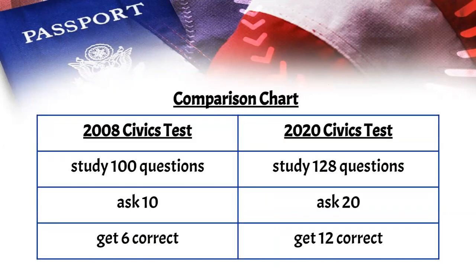To compare the two: for the 2008 civics test, there are 100 questions — they ask you 10 and you have to get six correct. For the 2020 civics test, you study 128 questions; they are a little different, some added, some removed, some changed. They ask you 20 of those and you have to get 12 correct. Make sure you are studying for the correct version of the test.